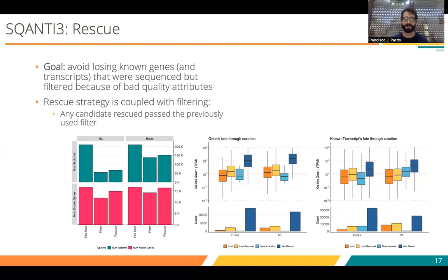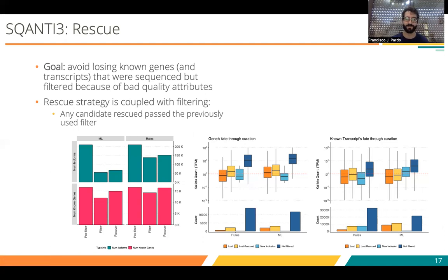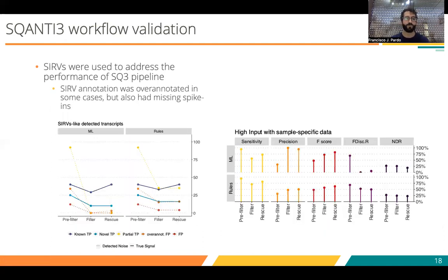Surprisingly, there are some anecdotal cases where, after filtering and doing the rescue strategy, it is possible to hit something in the reference that was not previously reported in the initial transcriptome. These are new inclusions — transcripts or genes that are normally lowly expressed, but in the case of machine learning they actually have a high expression value. To validate the complete workflow, we used SIRPs spike-ins, but as we know our approach is biased toward the reference, we modified the SIRP annotation slightly — creating a problem of over-annotation by including SIRPs not actually present in the sample, and also removing trusted models that were in the sample.